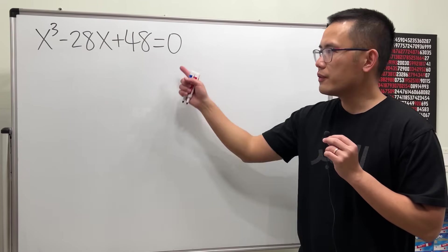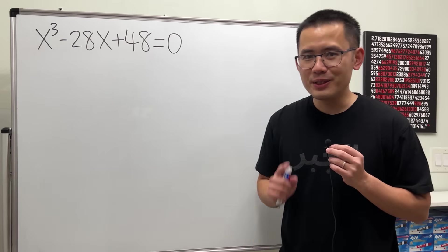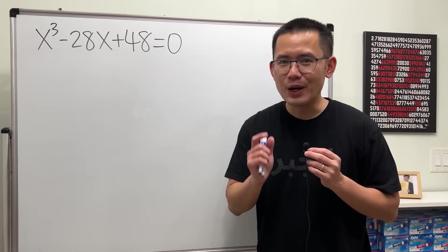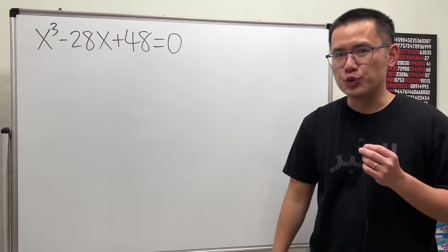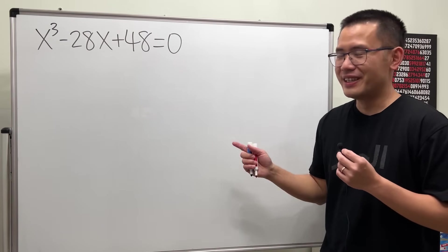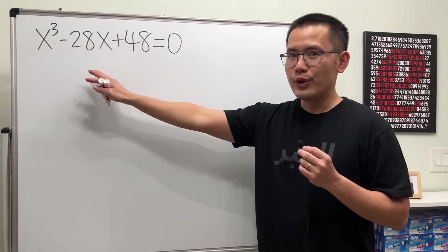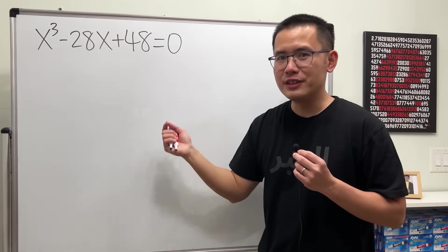Recently I showed you guys how to solve this cubic equation by using cosine. If you want to see that video, it will be on my main channel, link will be in the description. But of course, we do not have to go there. This is just a regular cubic equation. We can solve this by the rational zero theorem.